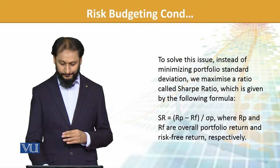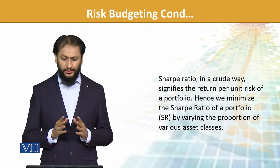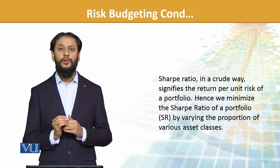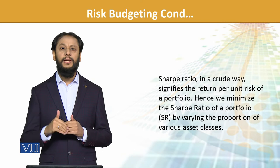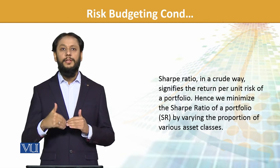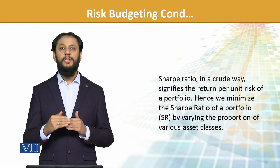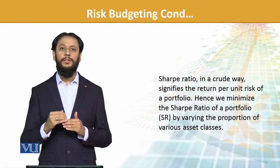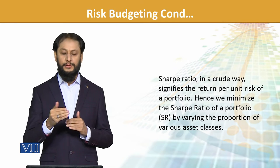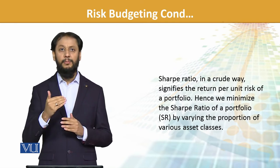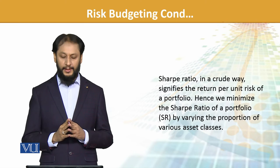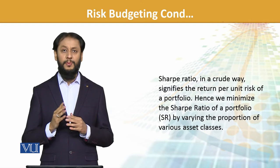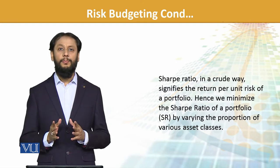The Sharpe ratio is a crude way of measuring significance — returns per unit of risk. One unit of risk is giving what level of return? So how much of the premium we have got is being gauged by the Sharpe ratio. Hence, our goal is to maximize the Sharpe ratio.